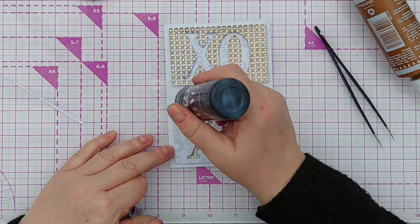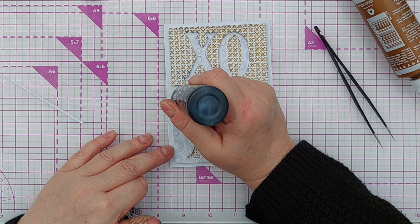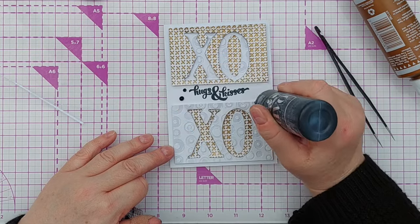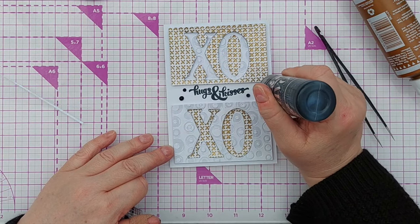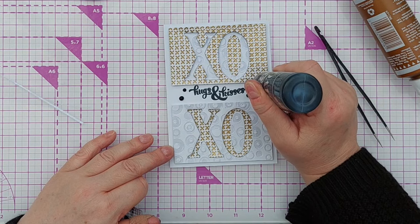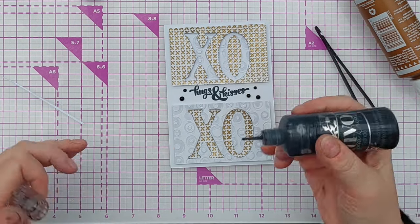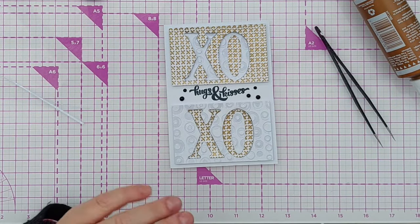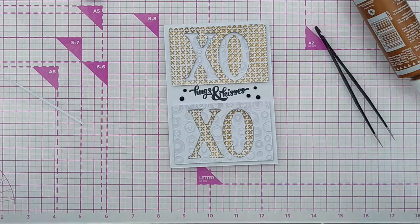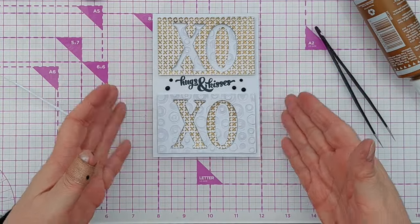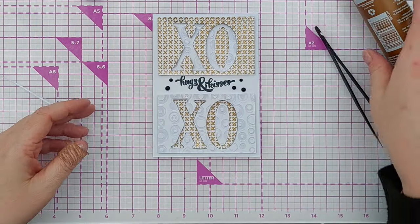To draw the attention to the sentiment here, I'm going to add a couple of Nuvo drops, black ones. This adds a little bit of dimension to that middle portion so it doesn't look left out. Those black dots grab the attention and say this is the sentiment, hugs and kisses, and then you can take in the rest of the card.